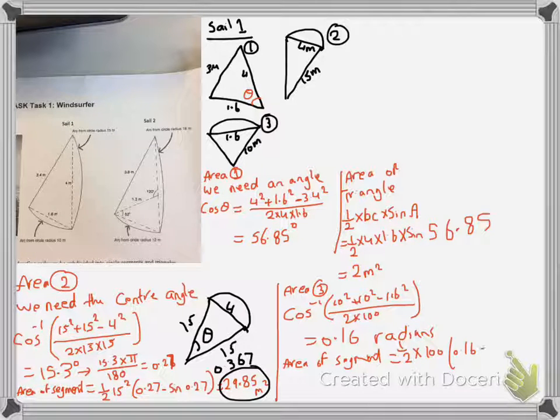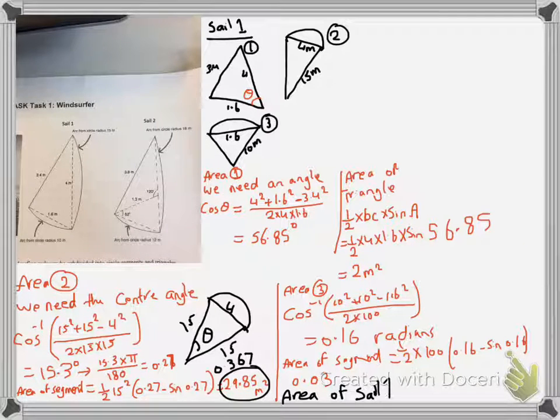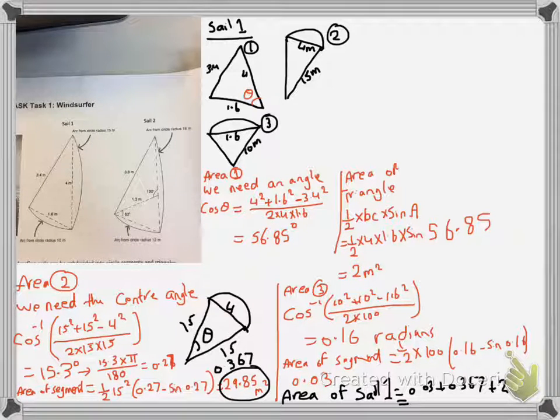And now finding the area of the whole shape, area of cell 1 equals 0.03 plus 0.367 plus 2, and that final answer is 2.6 meter square.